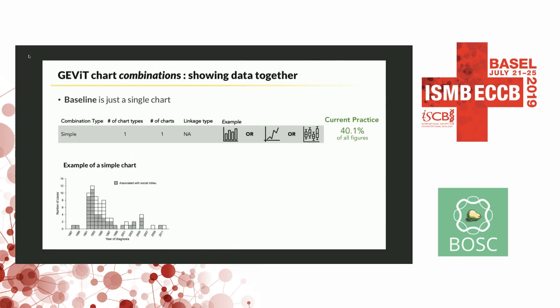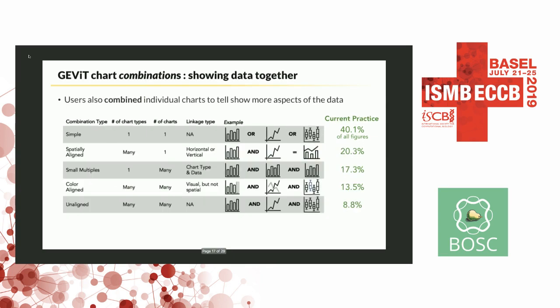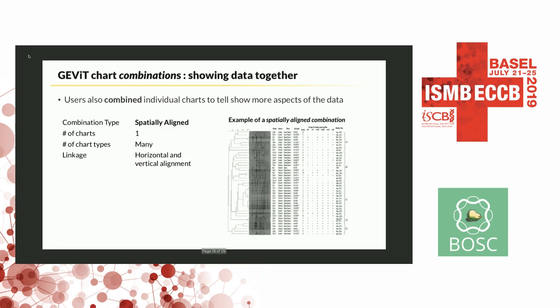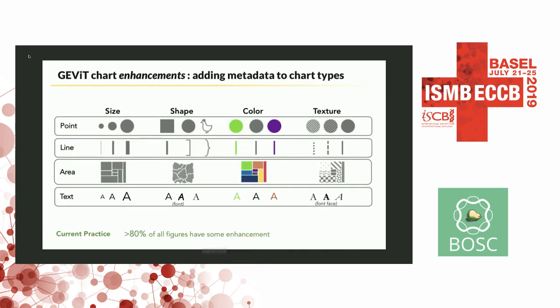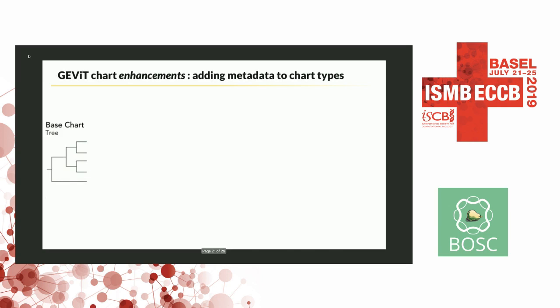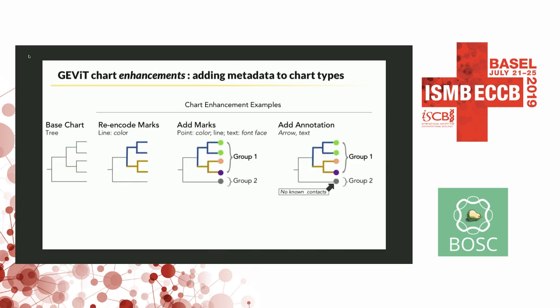I also saw that people combined data in a lot of ways. Often it was just a single chart, but they were often doing much more complex things that showed a systematic pattern. One common example is what we call a spatially aligned combination. Very rarely were people just throwing things together, which is our unaligned combination. We also saw that people enhanced things in very specific ways — you'd have a base chart type, then recolor the lines, add points, or add annotations.